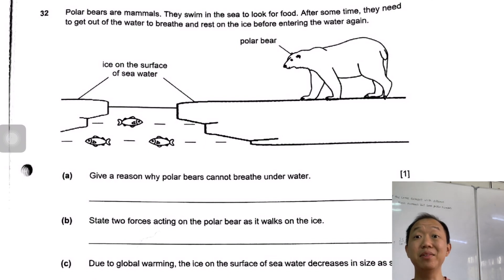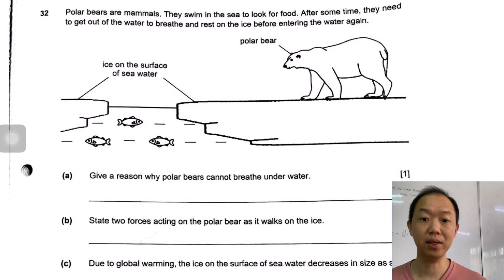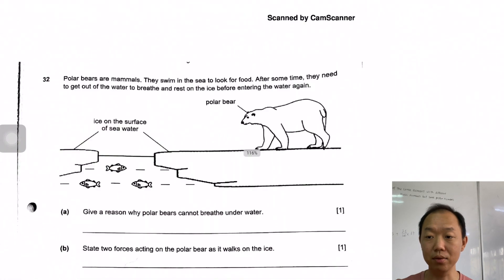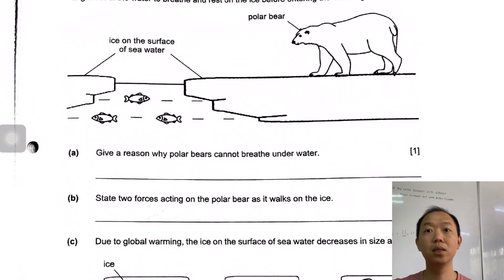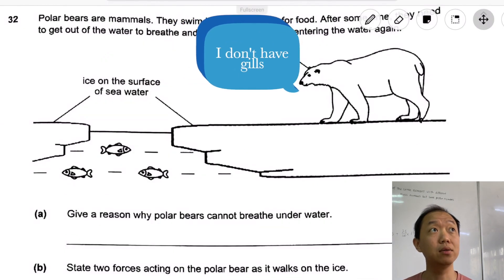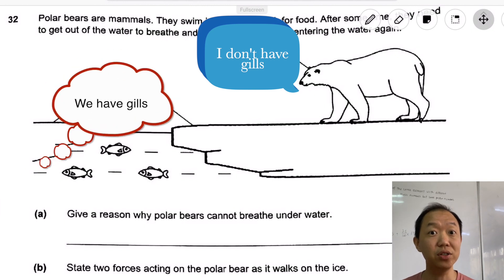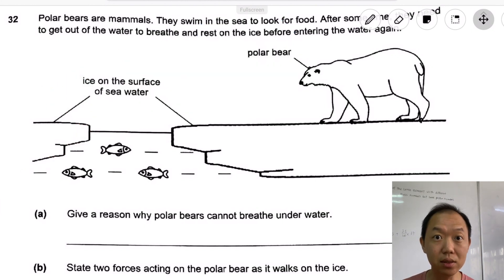This next question is about the polar bear. Polar bears are mammals, they swim in the sea to look for food. After some time, they need to get out of water to breathe and rest on the ice before entering the water again. We see ice on the surface, some cute little fish in the ice, and the polar bear is right here. Give a reason why polar bears cannot breathe underwater. They can't breathe underwater because they do not have gills. In P6 science, we studied that only animals with gills like fish can breathe underwater. Polar bears have lungs, so they cannot breathe underwater clearly. Unless they have gills, then they can breathe underwater. The reason is because they do not have gills to enable them to breathe underwater.